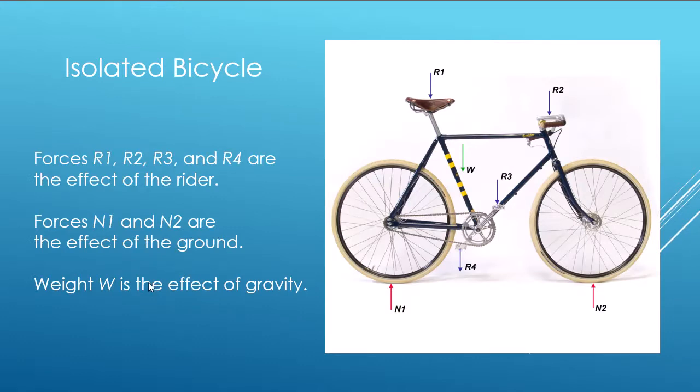Let's look at the Free Body Diagram of an entire bicycle. So, N1 and N2 are forces applied on the bicycle from the road surface. R2 is the weight that the rider puts on the handlebar.